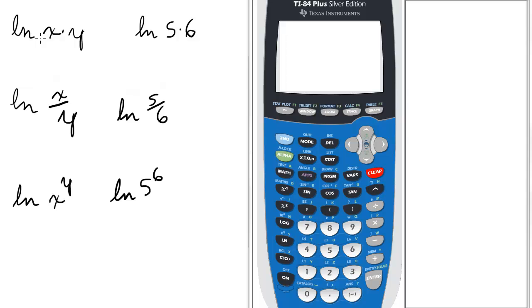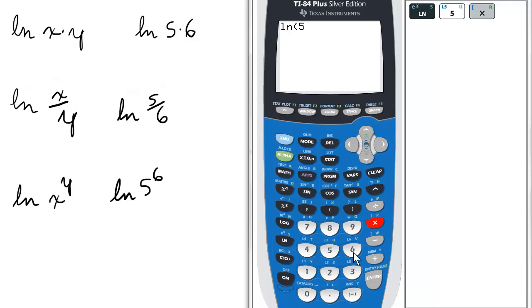So we have the ln of x times y. Let's try the ln of 5 times 6. See what it gives us. 3.4.